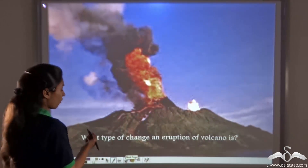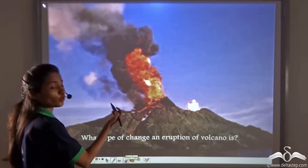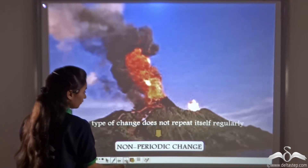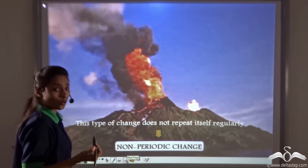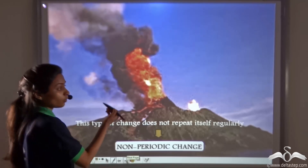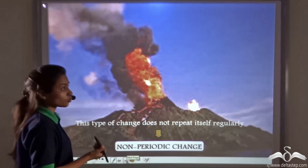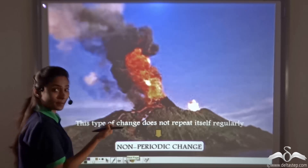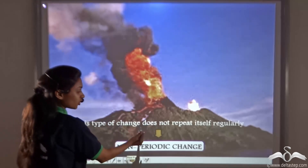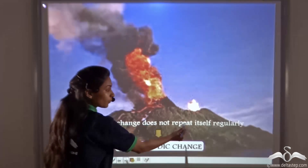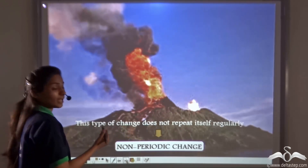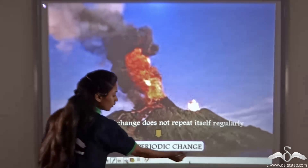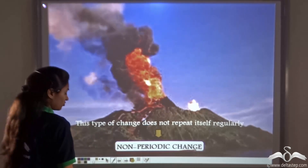Now, what type of change is an eruption of a volcano? We do not know when and how a volcano will erupt. We have no idea whether it will take place or not. This type of change does not repeat itself regularly and may take place at any point of time. So it is a non-periodic change.